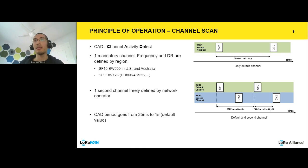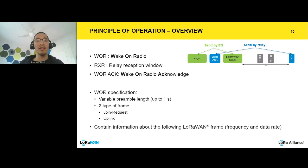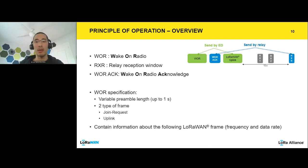Now let's talk about the end device. On one side we have a relay doing periodic CAD; on the other we have an end device that needs to communicate with this relay. Our solution was to create a new frame called wake-on-radio to allow the end device to catch this periodic CAD. Basically, the wake-on-radio frame has a preamble up to one second. This long preamble is the heart of the WOR frame and is what allows the end device to wake up the relay. There are two kinds of WOR frames: one for the join request, and one for the standard LoRaWAN uplink — the main difference being that the uplink WOR frame is encrypted.